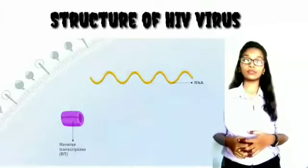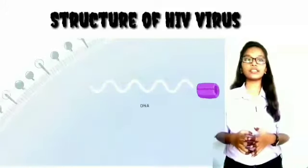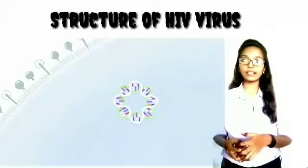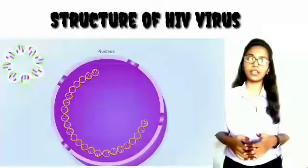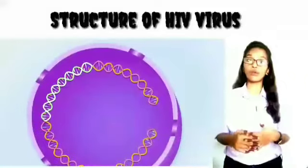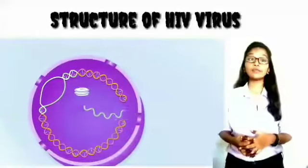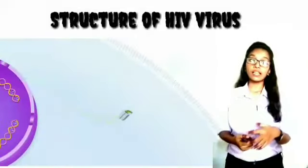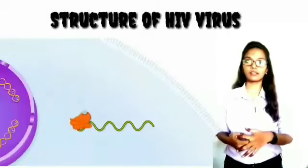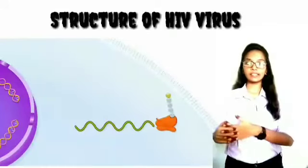GP120 connected with GP41 through chemical connections constitutes the target of neutralizing antibodies, which are capable of blocking the virus and checking its capacity for infection. The proteins of the core surrounding the central mass also form a polygonal structure immediately under the envelope. The central mass possesses two helices of RNA molecules in folded form, to which the reverse transcriptase is attached. The reverse transcriptase controls the copying of the RNA genome into its DNA copy.